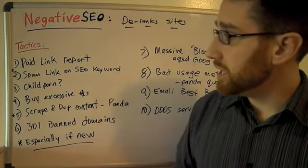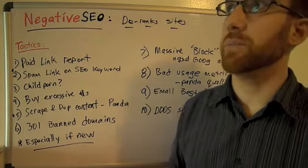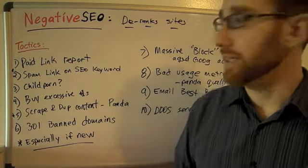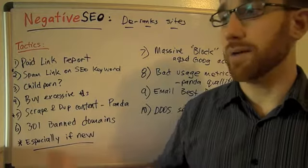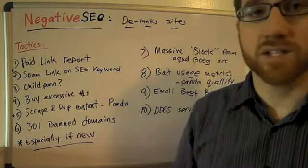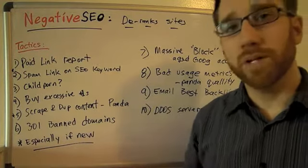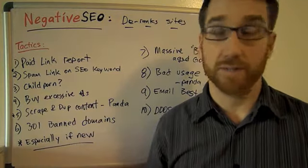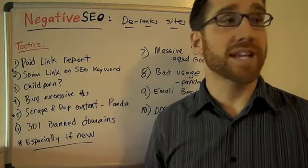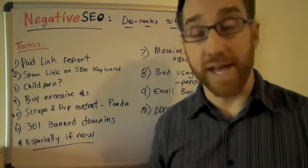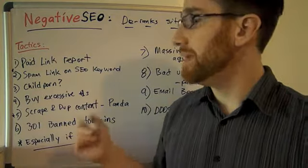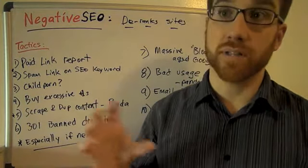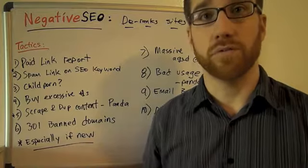The next one is a very common one — scraping the content so that the site gets a duplicate content penalty. What that means is you use a program to read the text on their page and publish that information on about a thousand different other blogs, making sure those blogs get indexed first. When you do that, it creates a duplicate content problem for that site and also brings them up for a Panda review.